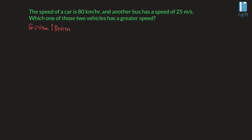So now we have the car. So we have the speed of car vc. This is equal to 80 km per hour.